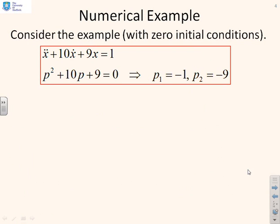Here's an example. So I've got ẍ + 10ẋ + 9x = 1. If I look at the characteristic equation, there it is, p² + 10p + 9 = 0, and I solve, I find I've got one pole at -1 and one at -9. So those are pretty widely spaced.